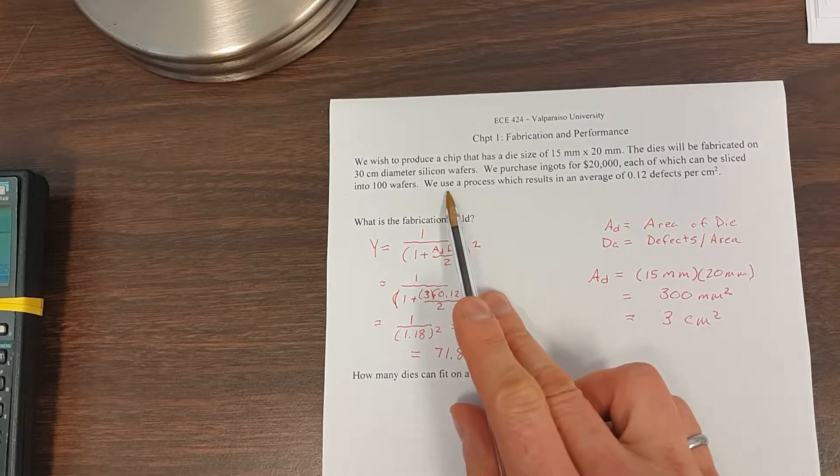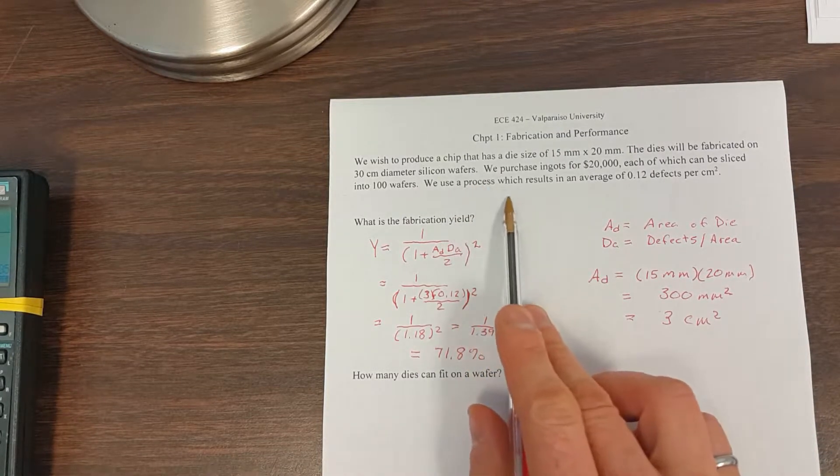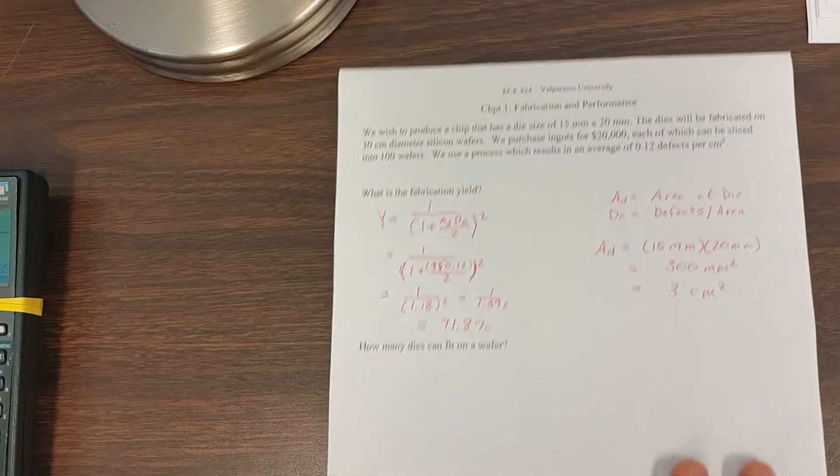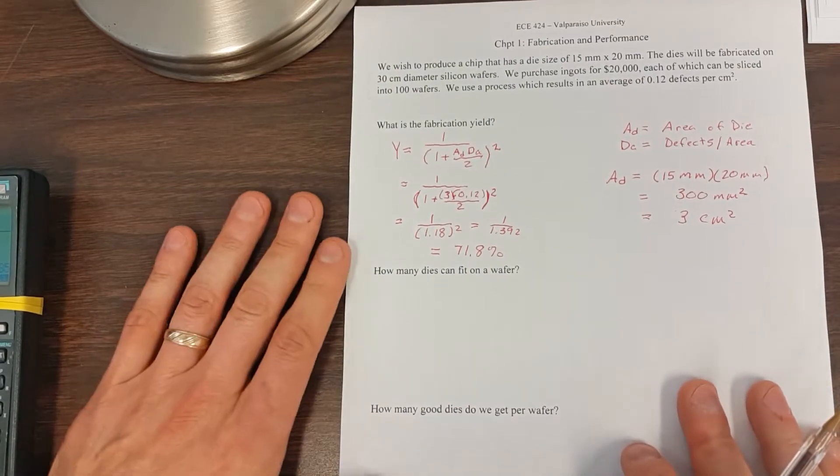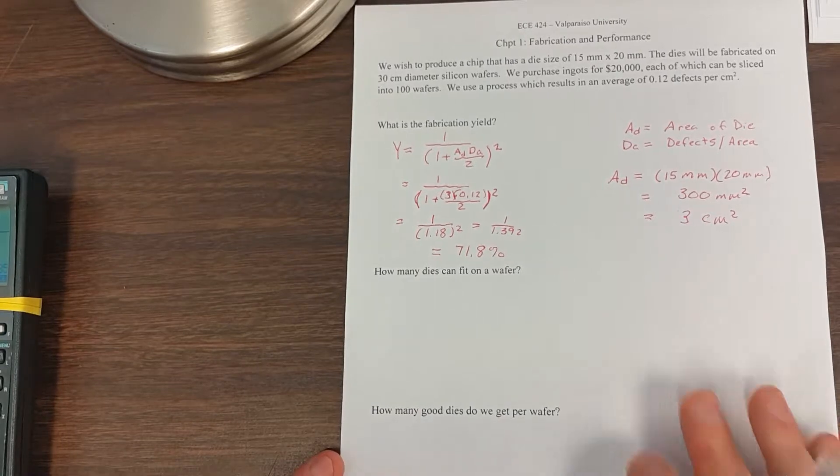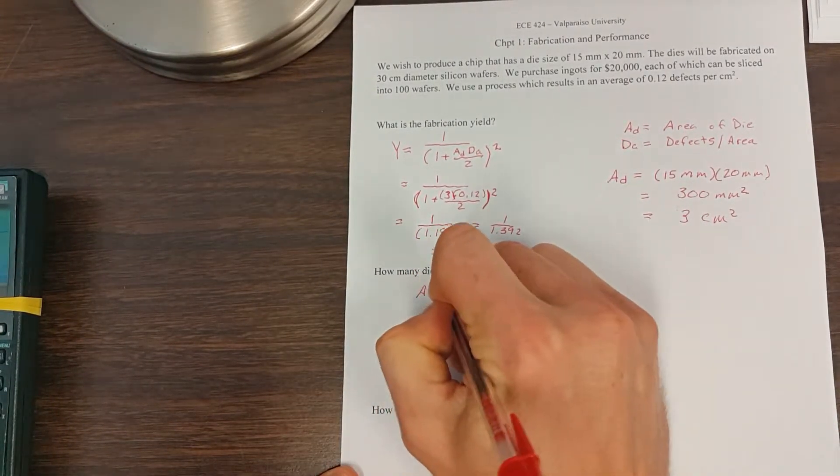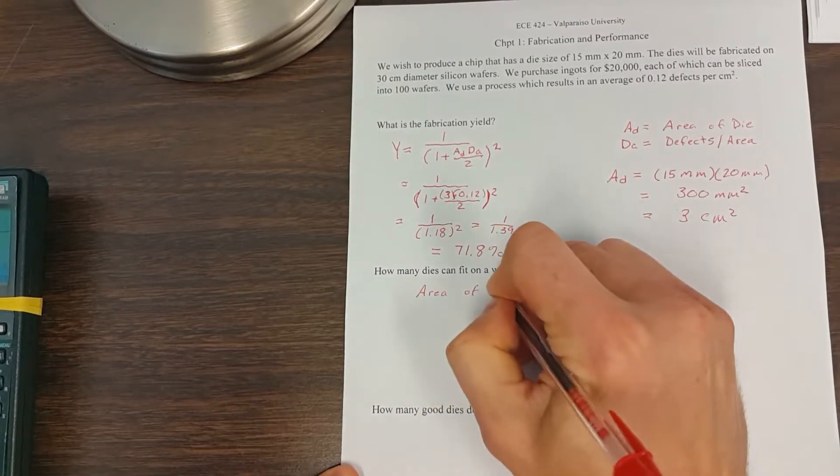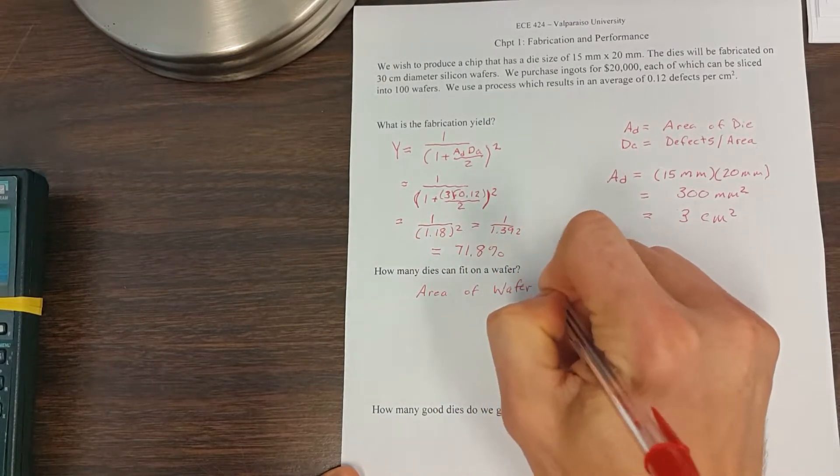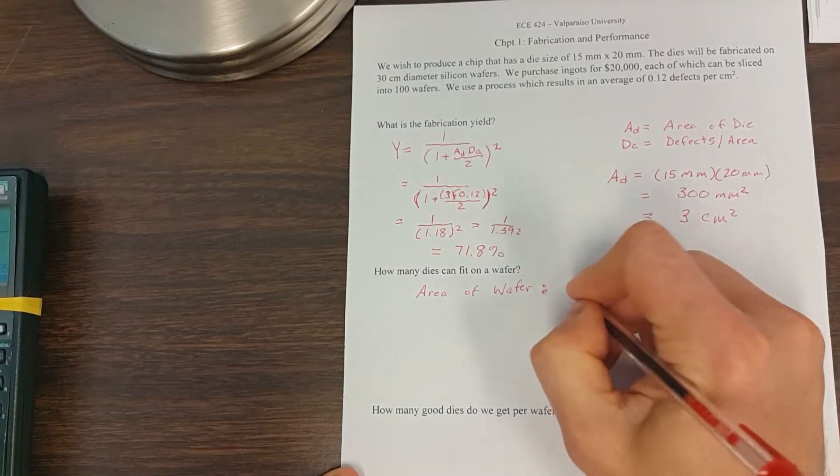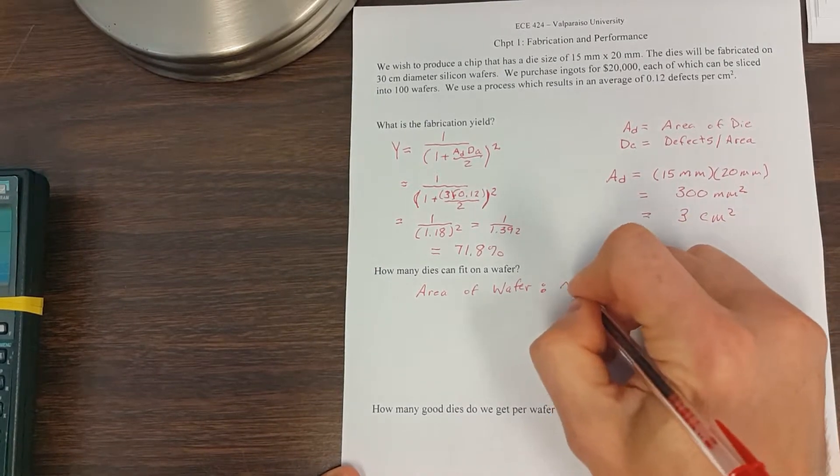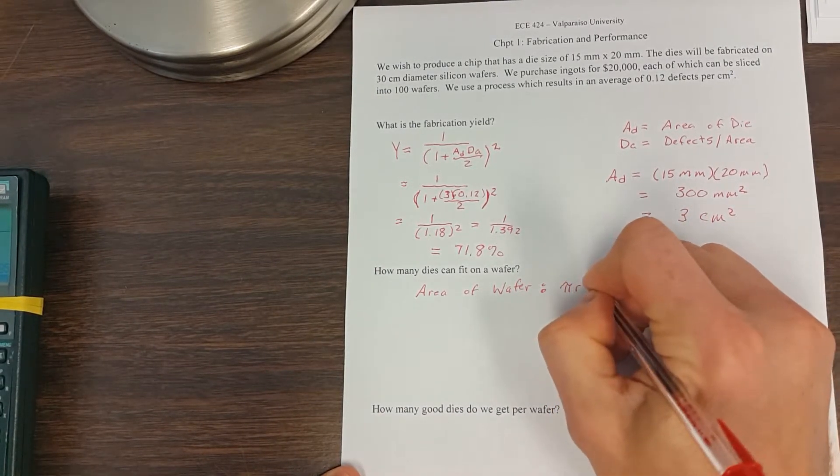When we're talking about ingots, slicing them into wafers, and we're talking about how many dies fit on a chip. And so we'll move on, and the question is, how many dies fit on a wafer? Well, first we need to do the area of the wafer. Now the area for a circle, because the wafers are circular, is pi r squared.